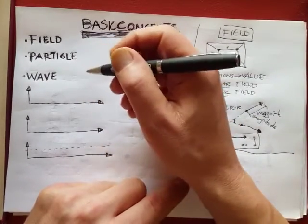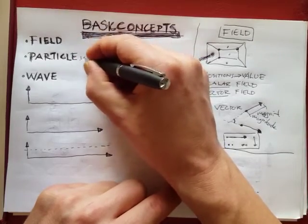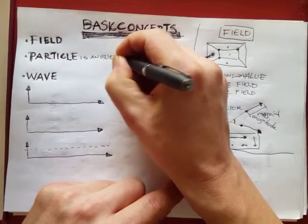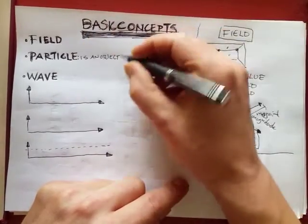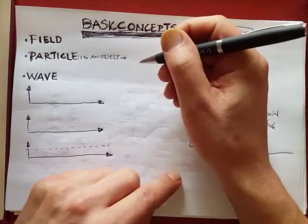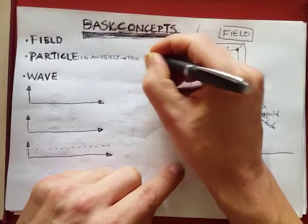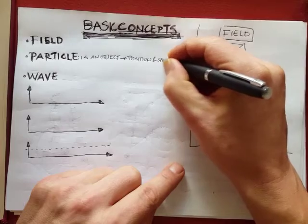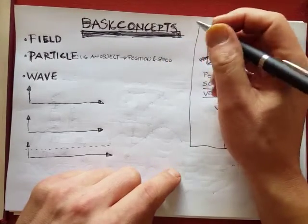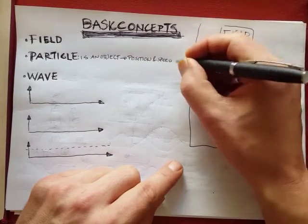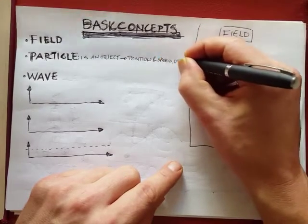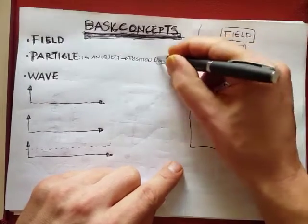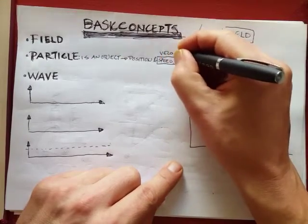Then we have a particle. A particle is an object to which we associate a position, a direction, and a speed. Possibly a speed. More precisely the speed also has a direction. And this combined is called velocity.